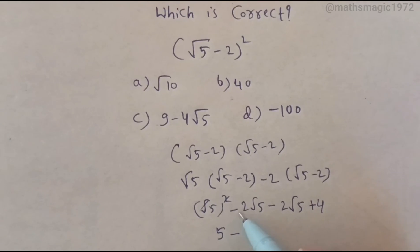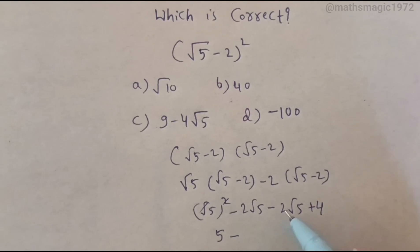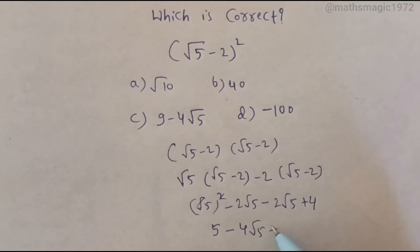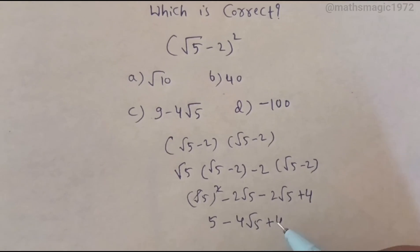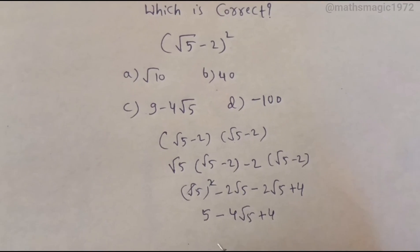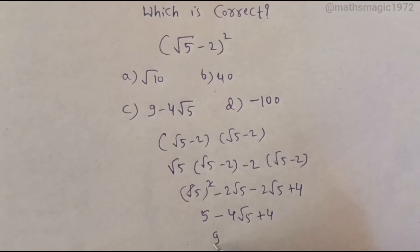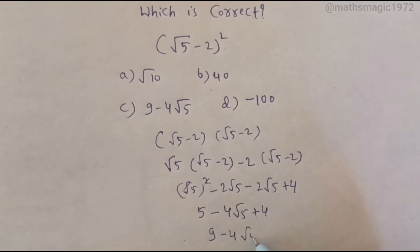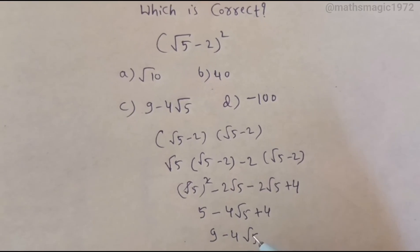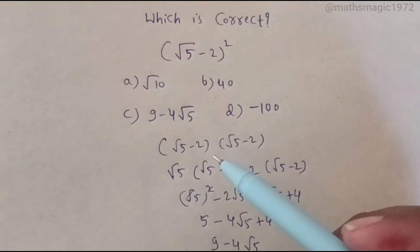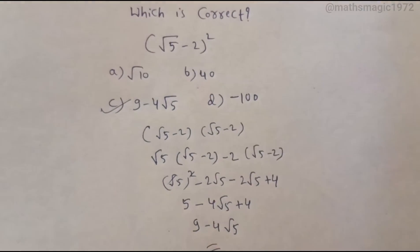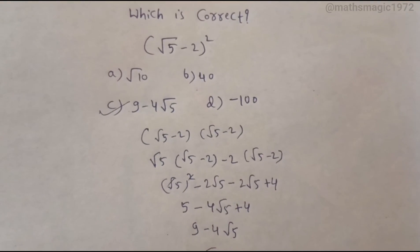So we get 5 minus 2√5 minus 2√5, which gives minus 4√5, plus 4. Therefore 5 + 4 = 9, giving us 9 - 4√5. Therefore, Option C: 9 - 4√5 is the correct answer. Thank you for watching.